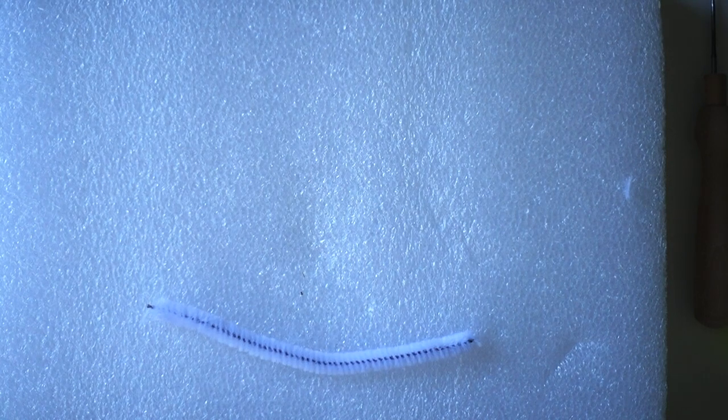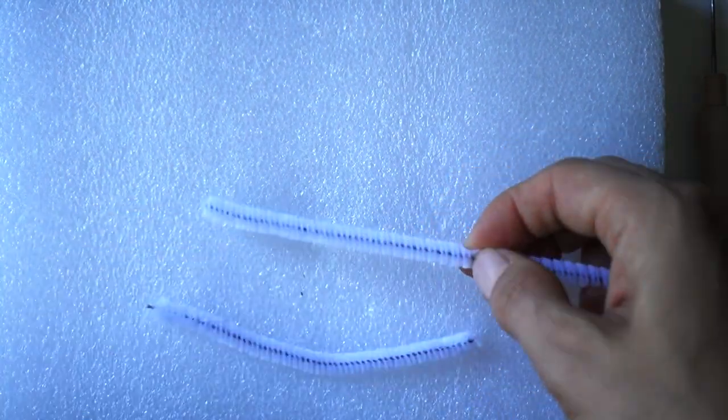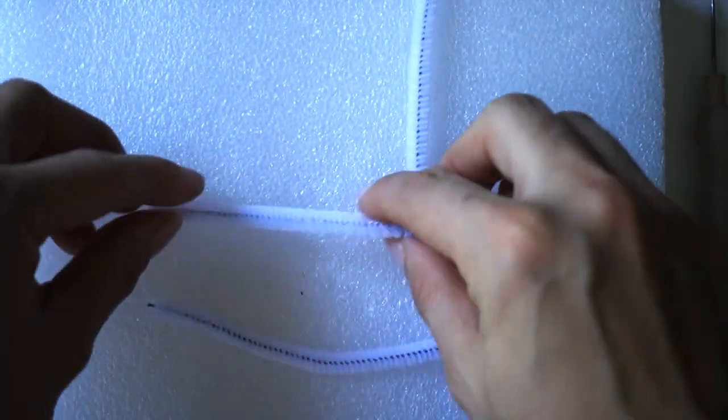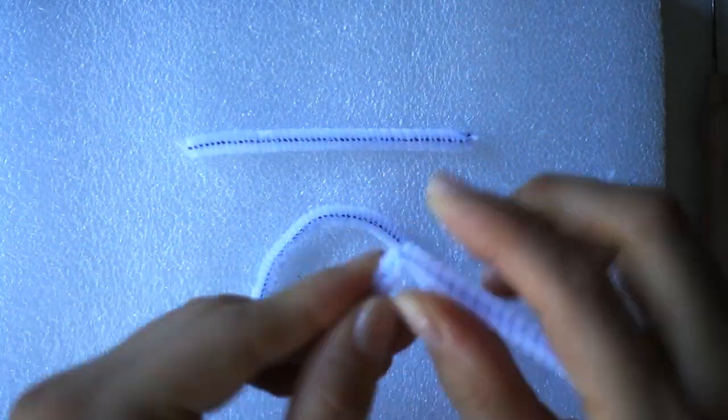To create the body, I'm taking the pipe cleaner and cutting eight and a half centimeters for the legs, six and a half centimeters for the arms and four and a half centimeters for the body.